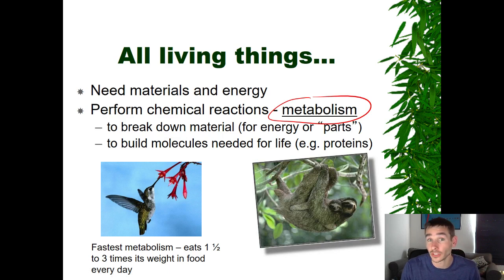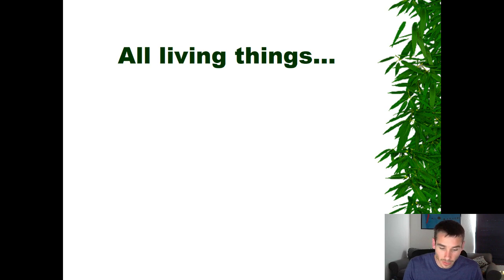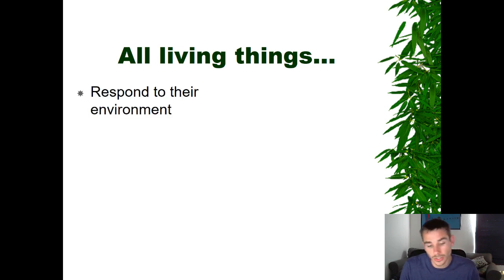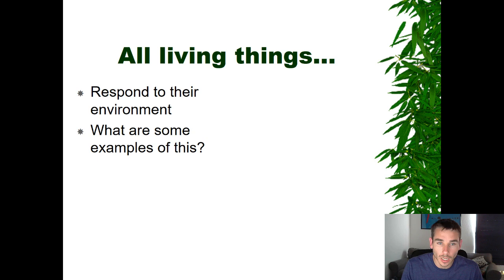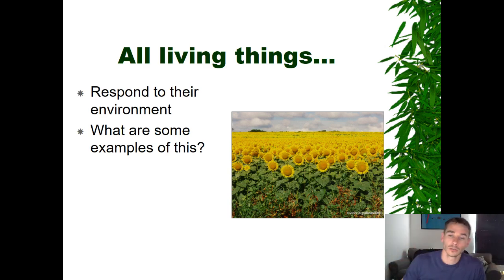Sloths, on the other hand, have very slow metabolisms. Metabolism can range widely, but all living things have a metabolism regardless of how fast or slow it is. The next characteristic is that all living things need to respond to their environment — they must be able to adapt and respond to changes around them. Think of some examples. Sunflowers, for instance, will follow the sun as it arcs overhead.